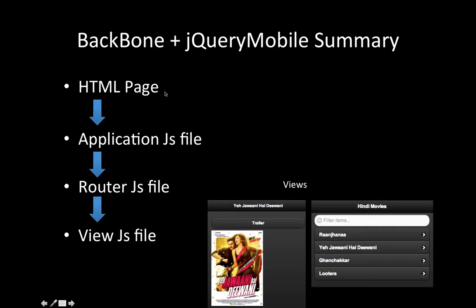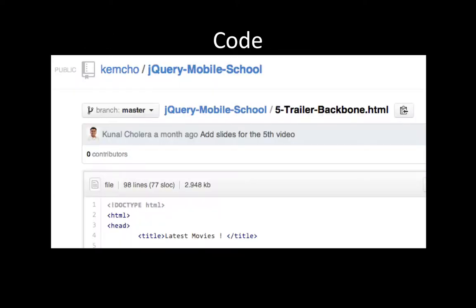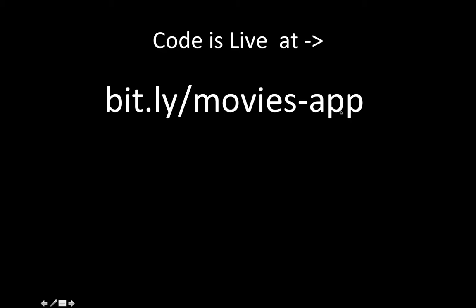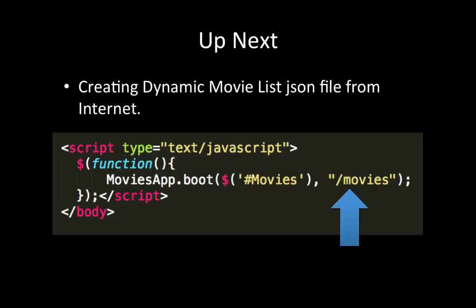In summary, we have our HTML page which calls the starting application JS boot file, which calls the router with the dynamic data. The router, based on the URL hash, calls the right view, and based on the view the HTML is generated and sent back to the client. You can find this code on GitHub at jQuery Mobile School — the file is phi-trailer-backbone.html — or check it live at bit.ly/movies-app. That wraps up this video; in the next video we'll look at how we generate dynamic movies from the internet and get the JSON file that this app understands. Thanks, happy learning!